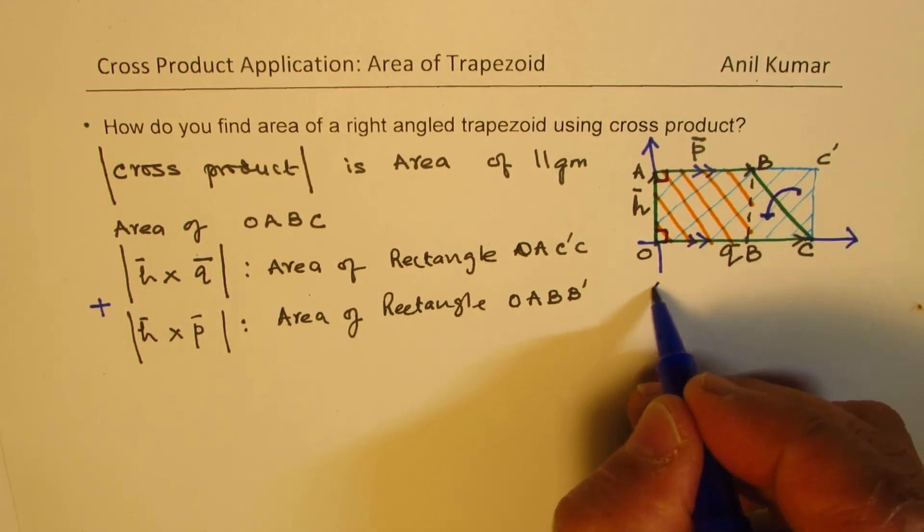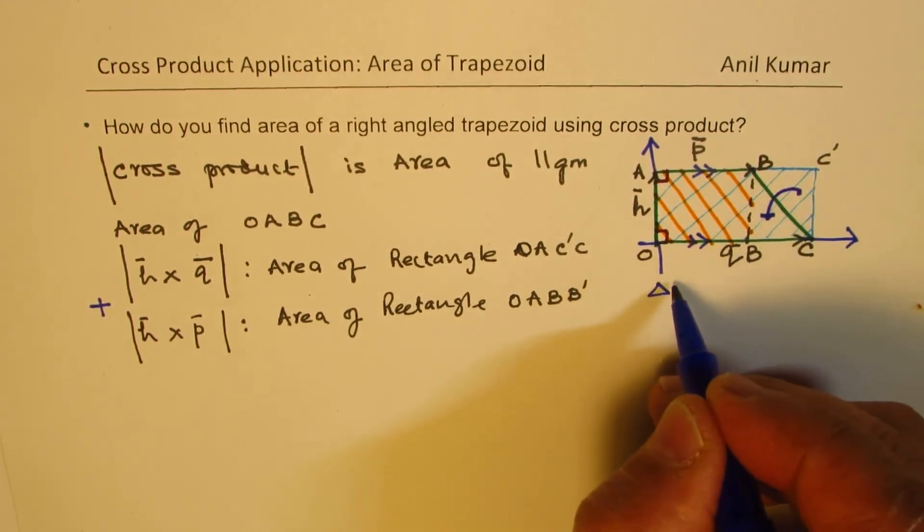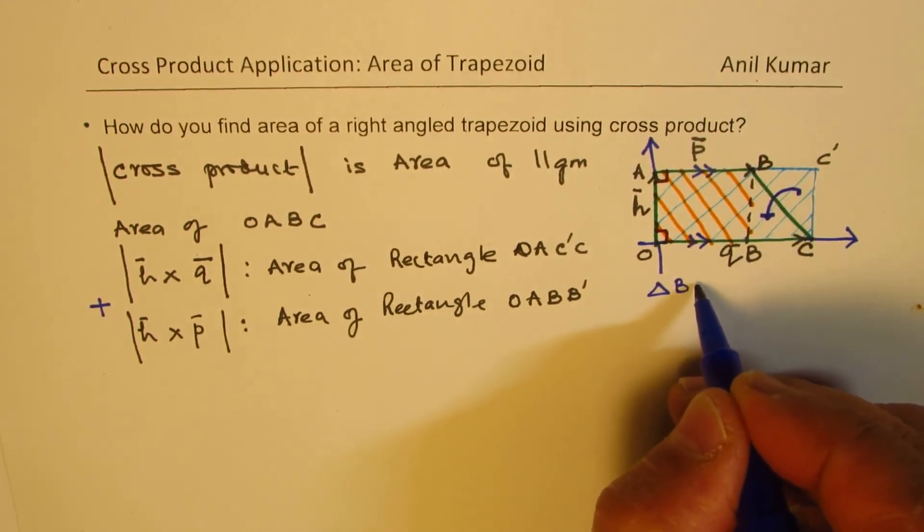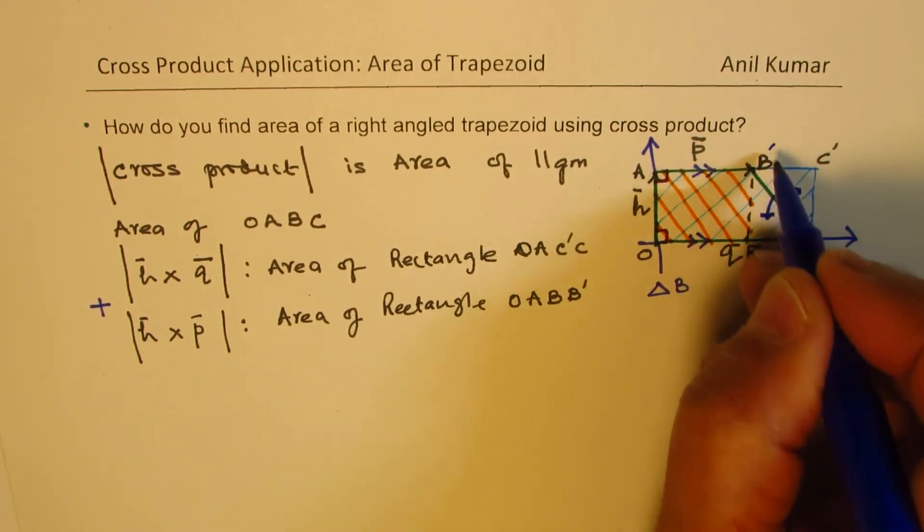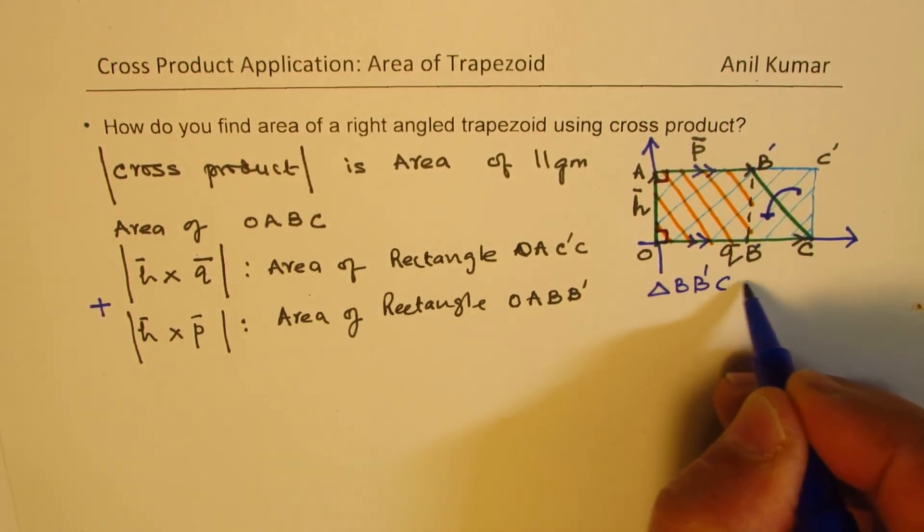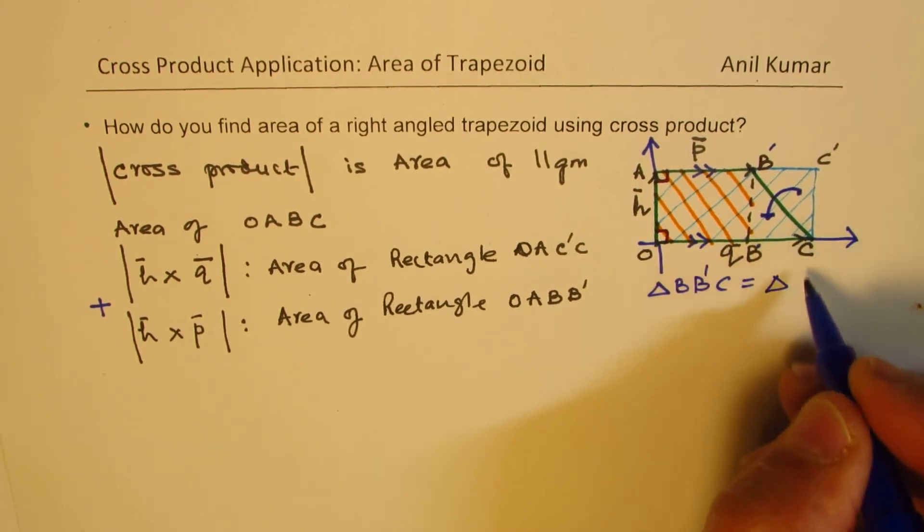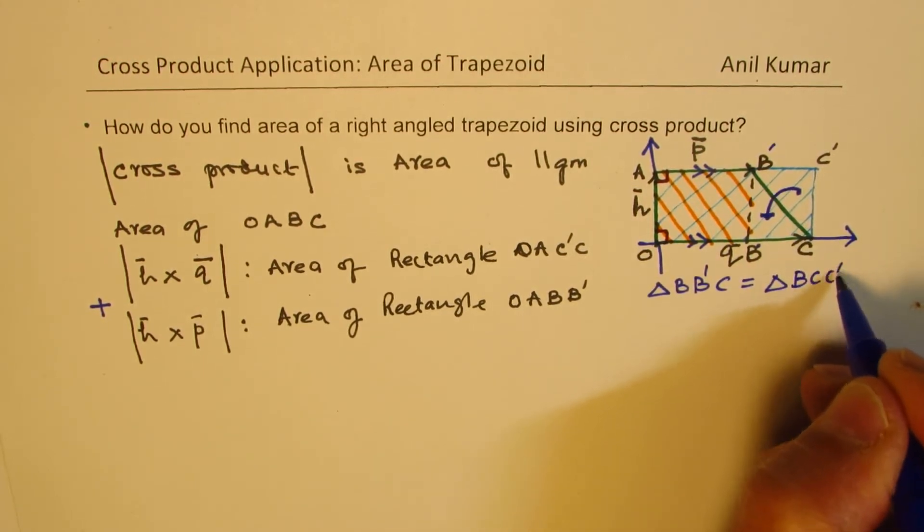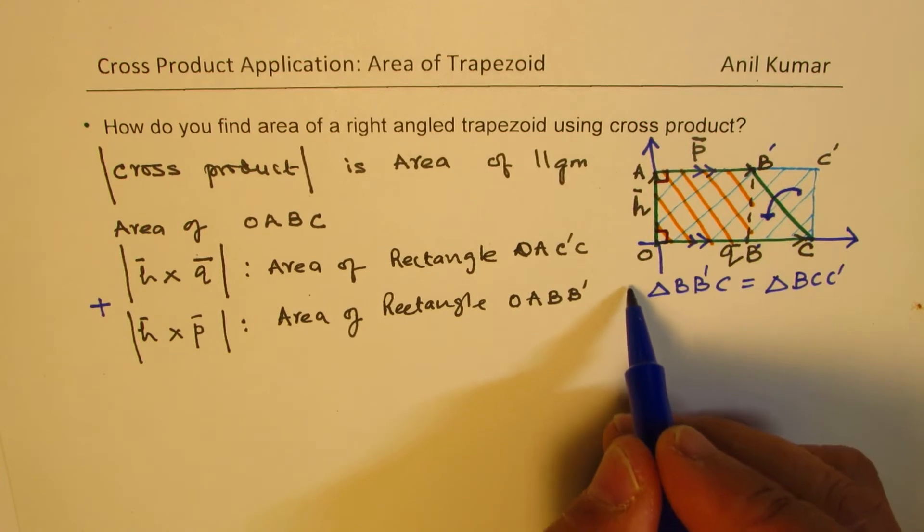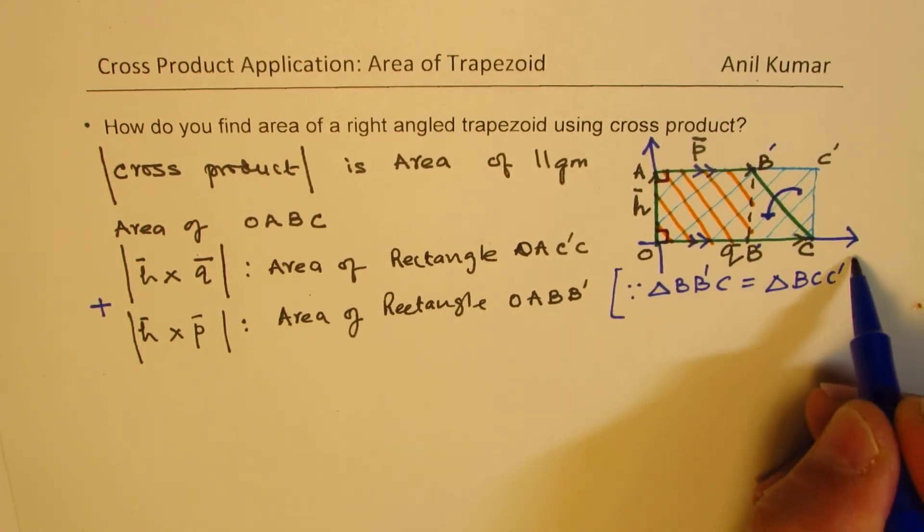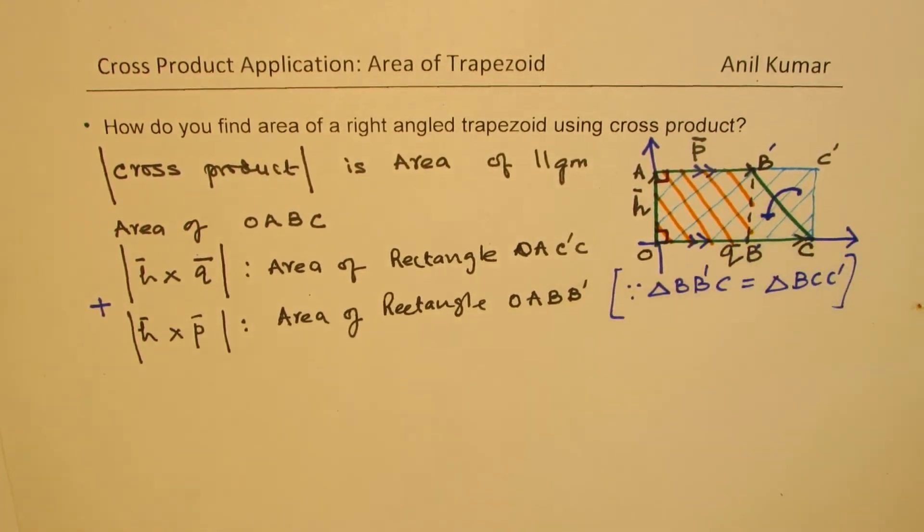We know that the area of triangle B, B dash, C, is equal to area of the triangle B dash C, C dash. We know this is as per the figure shown, that those two areas are same.